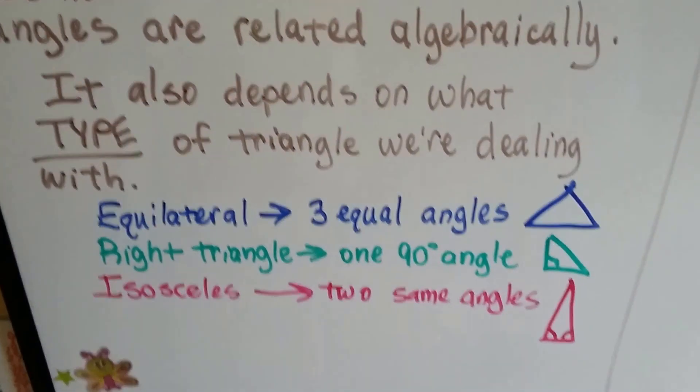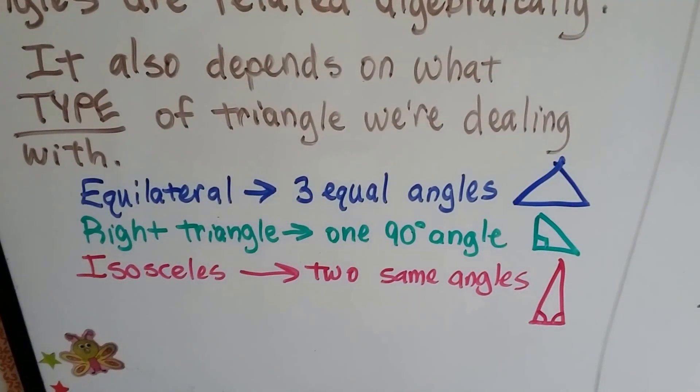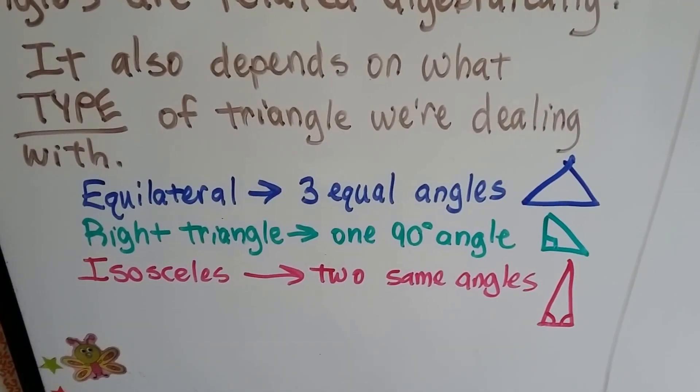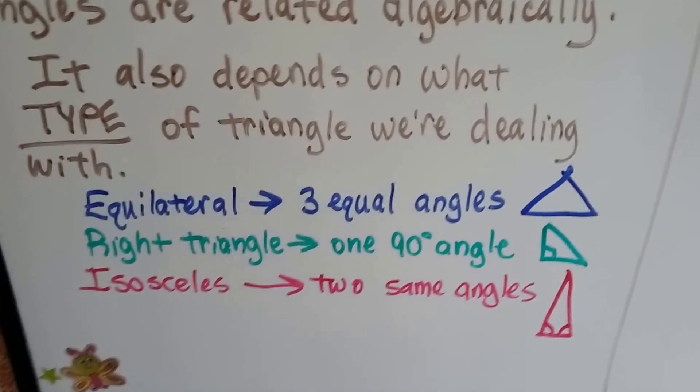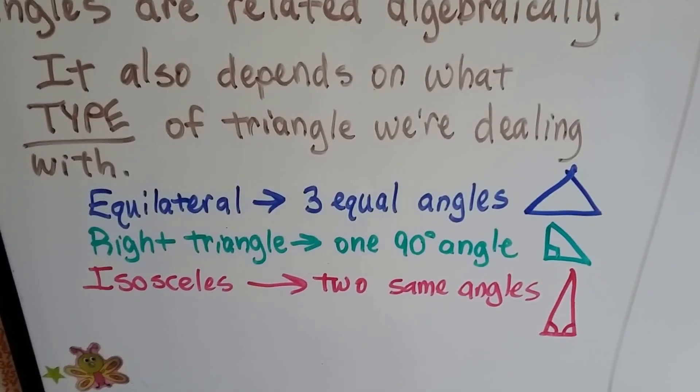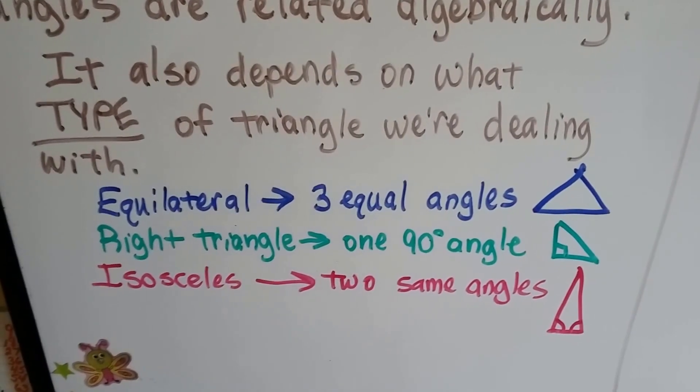It also depends on what type of triangle we're dealing with. If we're dealing with an equilateral triangle, we know all three angles are equal, and if they're 180 degrees from the Triangle Sum Theorem, they're 180 divided by 3, so they're 60 degrees each.